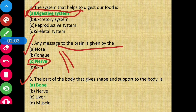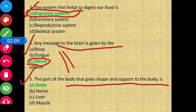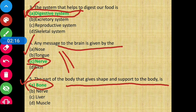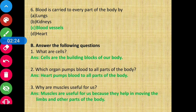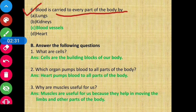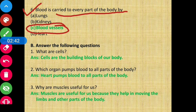Question number five: the part of the body that gives shape and support to the body — the answer is bone, option A. Question number six: blood is carried to every part of the body by what? Blood reaches each and every part of the body with the help of blood vessels. Option C is the correct answer.